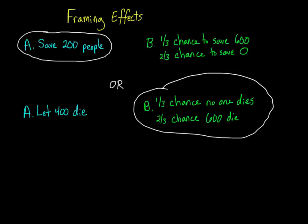Even though saving 200 people is the exact same thing as letting 400 people die in this example, it seems better to pick that option when it's framed or presented in terms of how many people will be saved. Likewise, it seems better to pick an option that offers a chance of no people dying rather than to risk not saving some people.